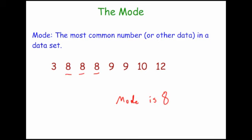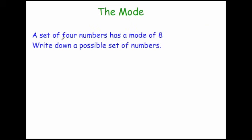Let's have a look at another type of question. The question says a set of 4 numbers has a mode of 8. Write down a possible set of numbers. So we know the mode is 8, that means 8 happens the most frequently. So that means that there's more 8's than any other number.